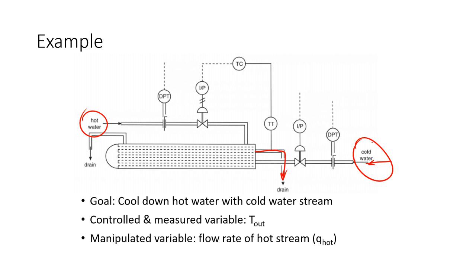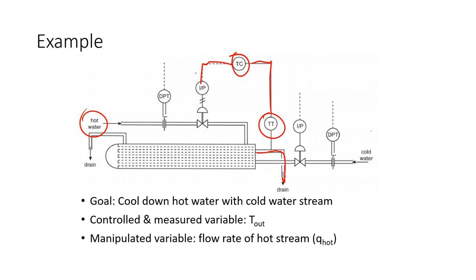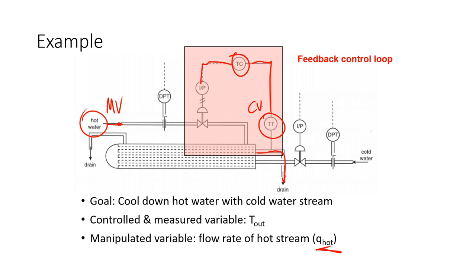The controlled and measured variable is the temperature out — specifically the temperature of the cold water coming out — and we have a controller that adjusts the hot water coming in. The manipulated variable is the flow rate of the hot stream, and the controlled variable is the exit temperature on the cold water side. That's our feedback control loop.